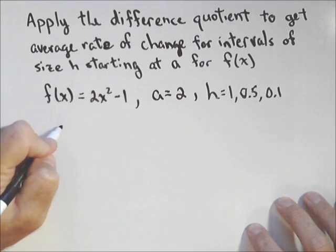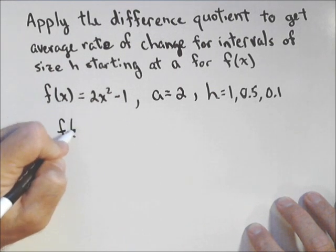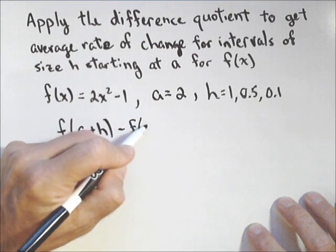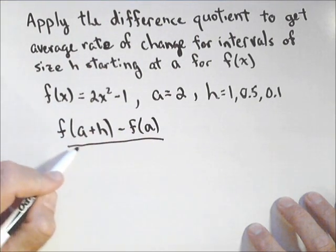So, our difference quotient, as a reminder, in terms of a, is f of a plus h minus f of a all over h.